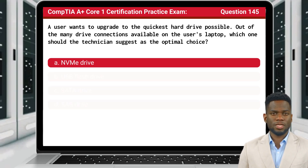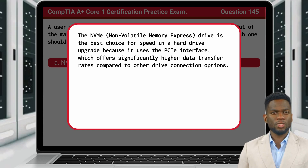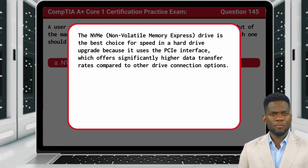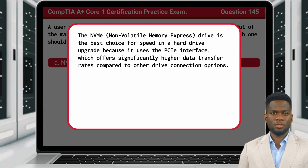The answer is A, NVMe drive. The NVMe drive is the best choice for speed in a hard drive upgrade because it uses the PCIe interface, which offers significantly higher data transfer rates compared to other drive connection options.